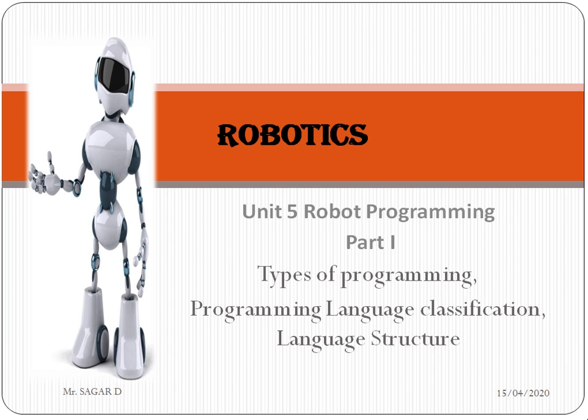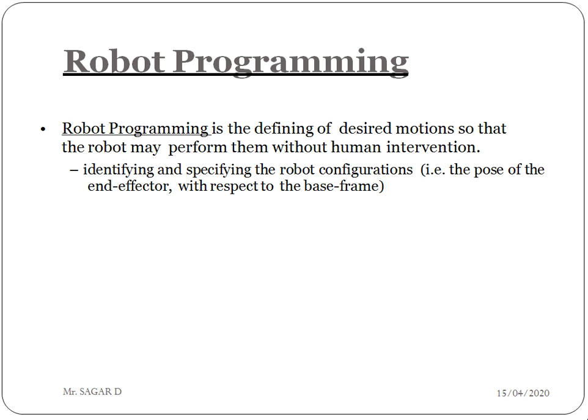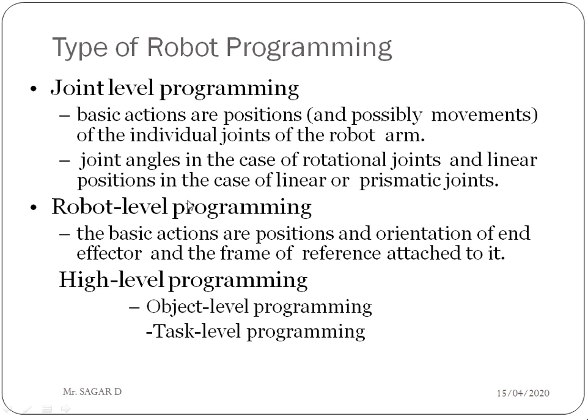We will first discuss Part 1 of this unit regarding robo programming. Programming is basically related to the movement of the robot. It can be defined as the desired motion so that the robot may perform tasks without human intervention. The job of the robot is to carry out useful work, like identifying and specifying the robot configuration — that is, the pose of the end effector with respect to the base frame.